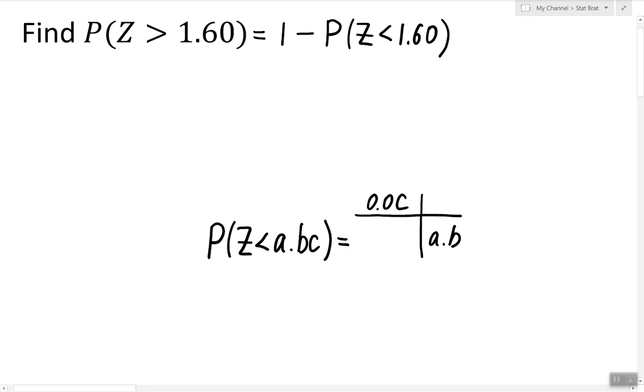Now we have probability of z being less than some number. So to answer this question, we look in the table for the row 1.6 and we look for the column with 0.0.